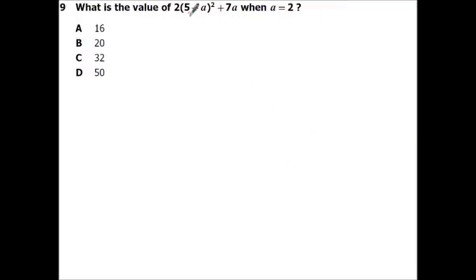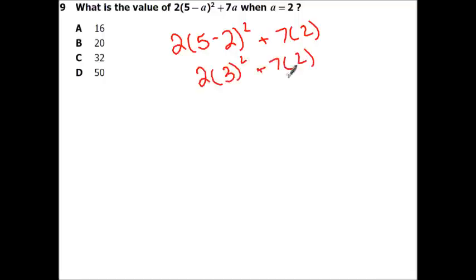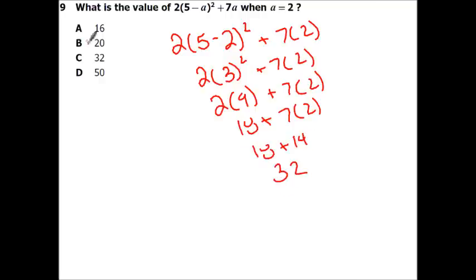Alright, which is the value of 2 times the quantity of 5 minus a, and all that squared plus 7a when a equals 2? So you're just going to substitute in. Alright, do your parenthesis first, so this is going to be 2 times 3 squared plus 7 times 2. Let's do our exponent. Do my multiplication. Do my multiplication. Do my other multiplication. And finally, we're going to add it together. Alright, so there you go, 32.